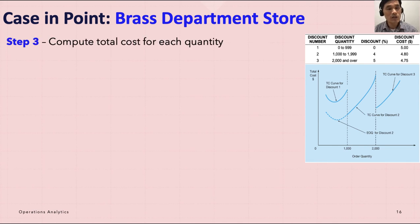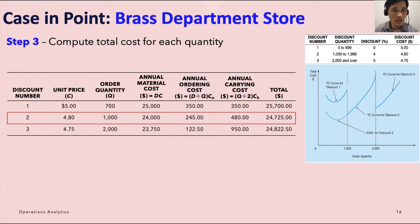Then we can go to step three: compute total cost for each quantity. Now you have different EOQ depending on the discount, and you want to calculate corresponding total cost. For discount one, unit price was $5, order quantity was 700, which is the EOQ for this discount. If you calculate the material cost, it's $25,000. So 5 times 5,000 is 25,000. And D over Q times C_O, if you calculate that, it's 350, and annual carrying was 350. The total cost is $25,700 for discount number one.